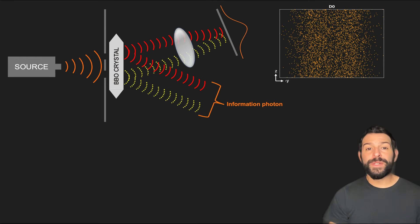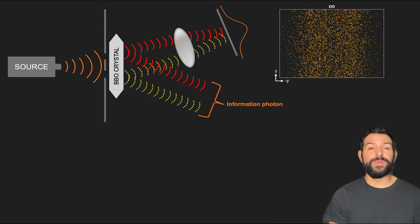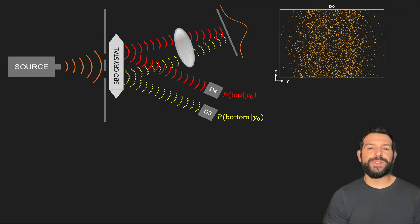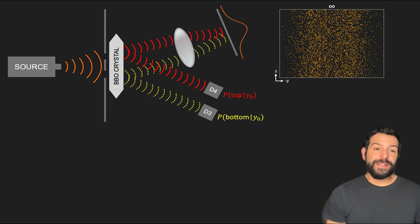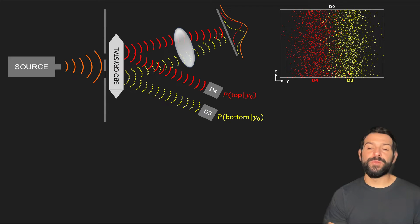So what we always get at the screen is a non-interfering pattern similar to the one we see in the conventional double-slit experiment where we measure which slit the particle went through, irrespective of what we do with the information photon. And if we do decide to measure the information photon, its probability of being detected at D3 or D4 will depend on the landing position at the screen Y0. Therefore separating the hits on the screen based on the corresponding measurements at D3 and D4 allows us to see which slit the screen photon went through.